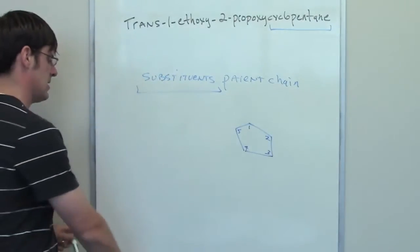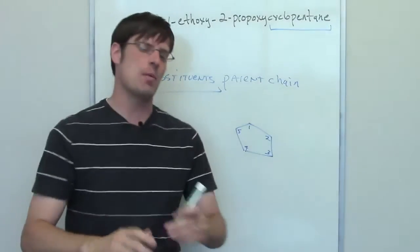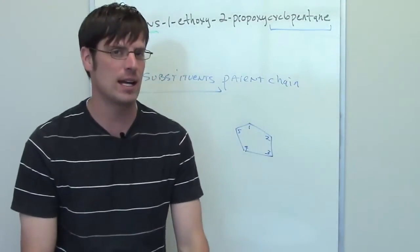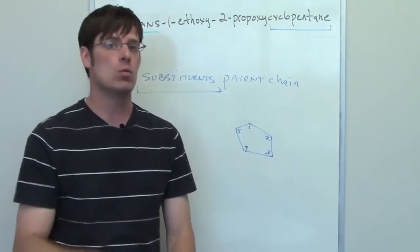Now, we're going to identify the substituents and put them in place. Now, keep in mind one thing. The prefix trans tells us that the two substituents that are bound to the cyclopentane ring have to be pointing in opposite directions from each other, one up and one down.